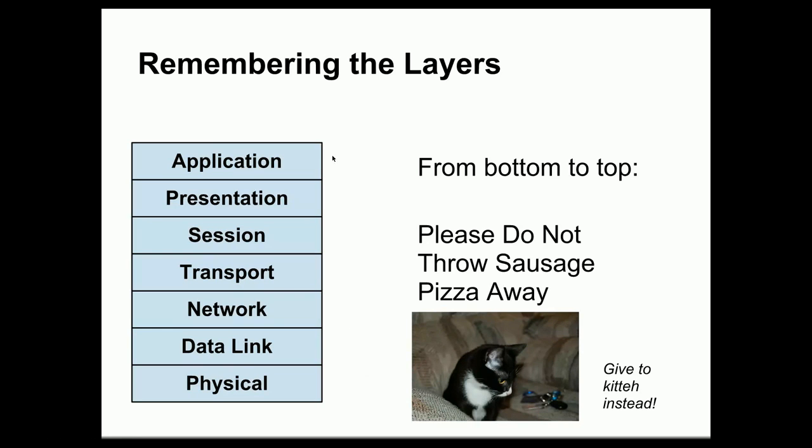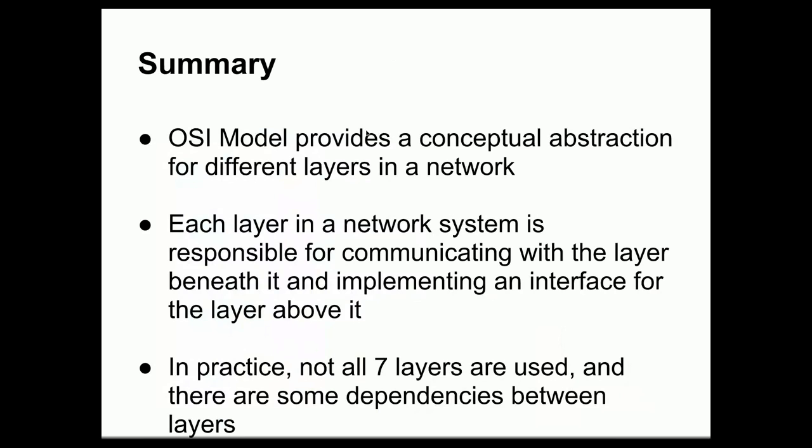In summary, the OSI model provides a conceptual abstraction for the different layers in a network. This is a conceptual way we use to discuss and design networking systems without becoming lost in the great complexity required to make them work. Each layer is responsible for communicating with the layer beneath it and implementing an interface for the layer above it. In practice we don't use all seven layers, and there are sometimes dependencies between layers, but this remains a good conceptual model for understanding what makes up a network system at a high level.